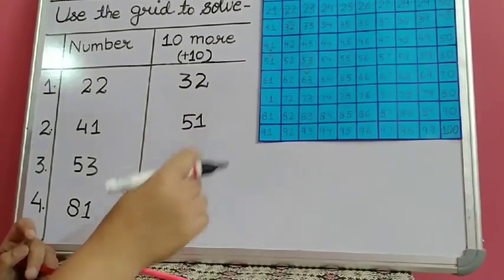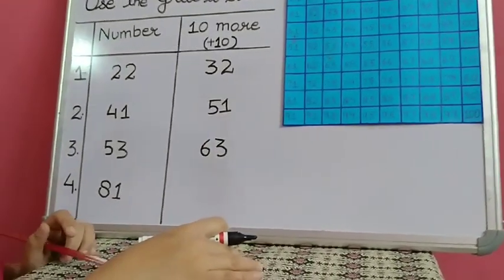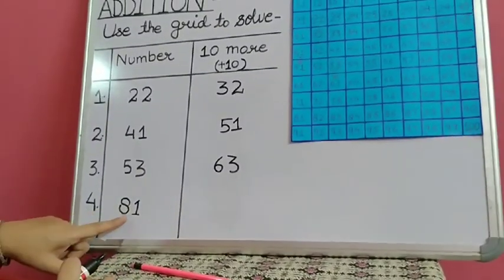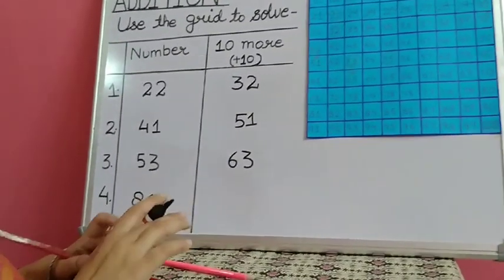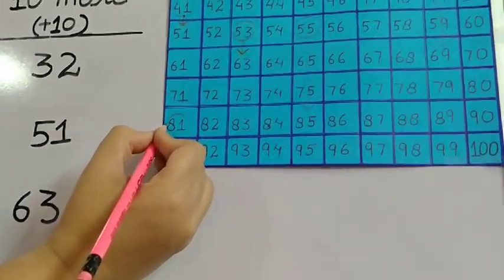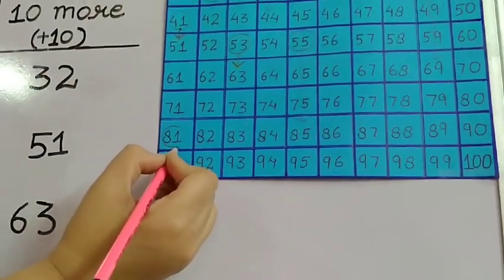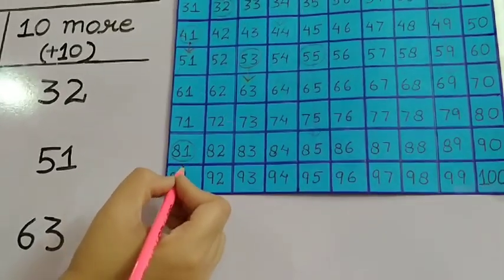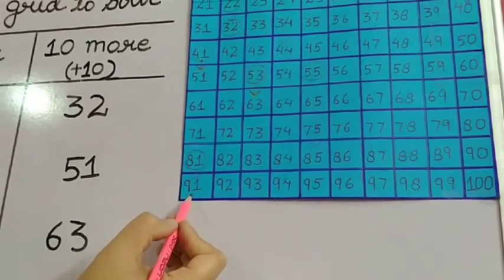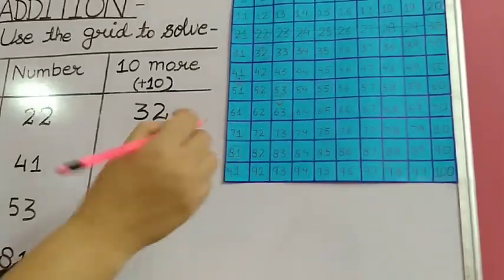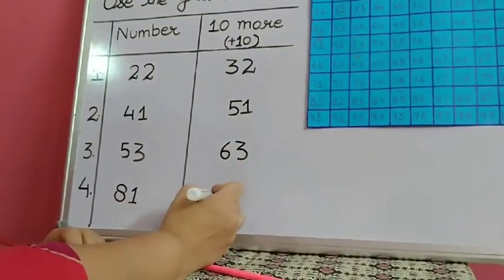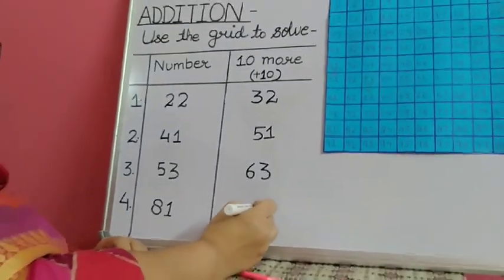I hope you are finding it easy to add with the help of a grid. The next number is 81. Start from 81 and move 1 row below — you will reach 91. The answer is 91.